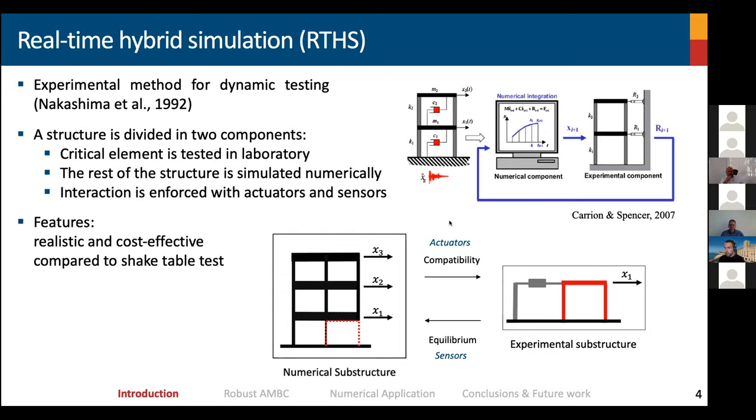There are some illustrations here where we show both domains, one that we're going to call the numerical domain, and the experimental substructure. How we enforce both compatibility and equilibrium at the boundary between these two domains through the use of actuators and sensors.